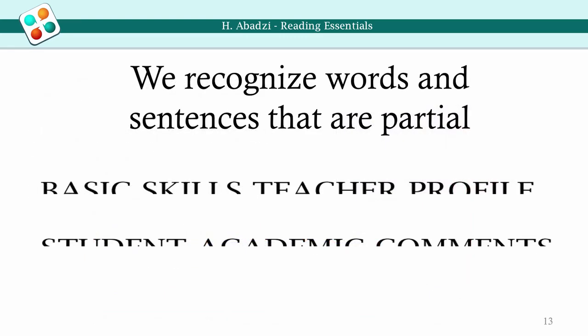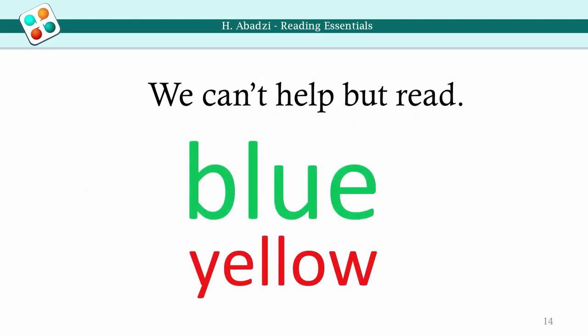Automatic readers can read words whose letters were cut in half. Can you read these sentences? What color are these words — name them fast. Did the color of the word confuse you for a moment? Did you first notice the color or the meaning of the word? As you see, we recognize words faster than we note the color of their ink.